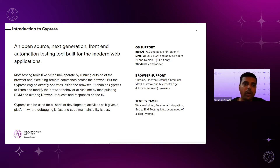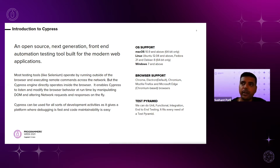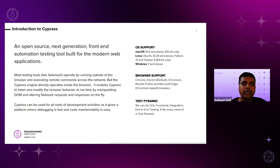That means we can mock network requests, API requests, or responses according to our requirements using the built-in methods that Cypress provides. Whereas non-Cypress automation tools operate by running outside of the browser and executing all remote commands across the network. The advantages of running the Cypress engine inside the browser will be covered in further slides.